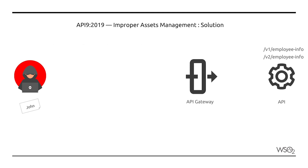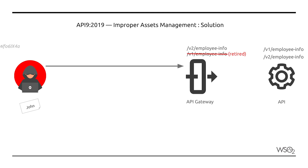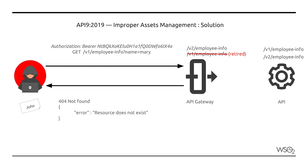In a scenario where there is no requirement to allow access to the older version of an API once a newer version becomes available, an API gateway can be used to manage the life cycle by retiring the older API version. This will ensure that API version 1 is completely removed from the API gateway and is no longer accessible to any applications.